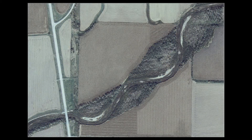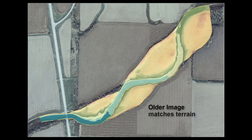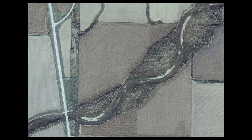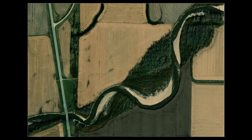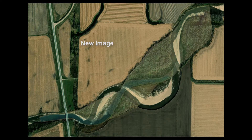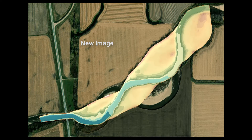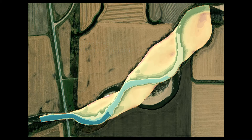For either method, it is important that the aerial image used to designate the land use areas be consistent with the terrain data. For example, if a river channel has migrated, an older terrain dataset may show the channel in a different location than a recent aerial image. This could lead to erroneous land use areas for the terrain data used to develop the model.